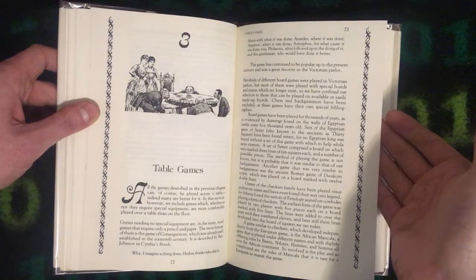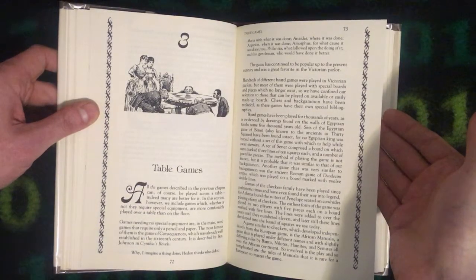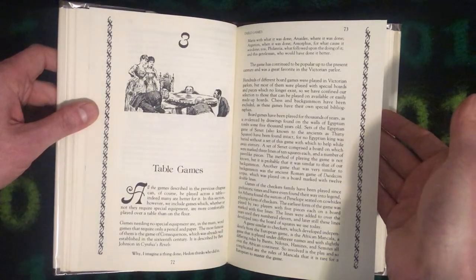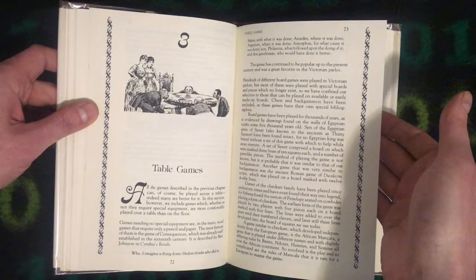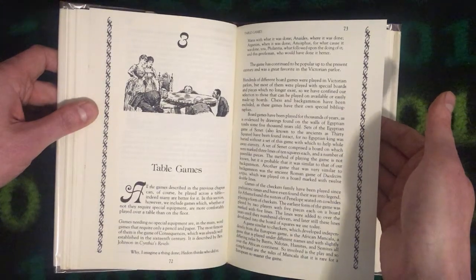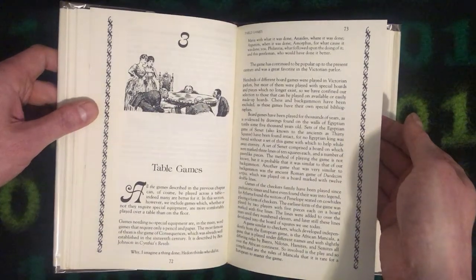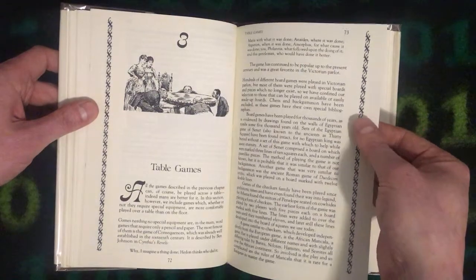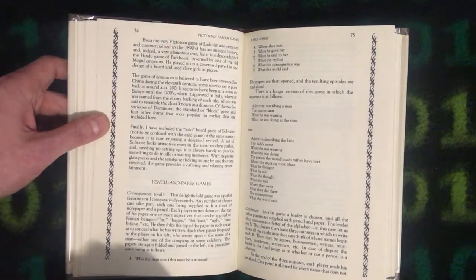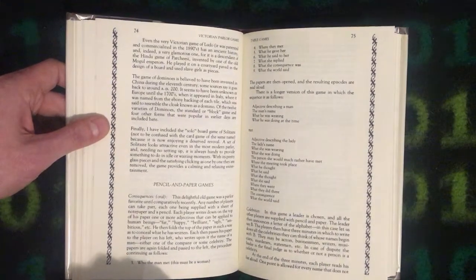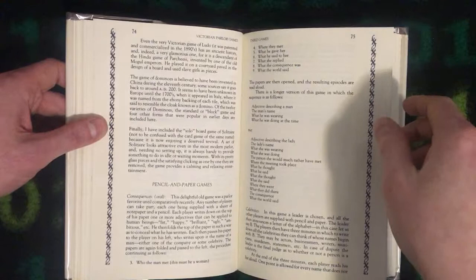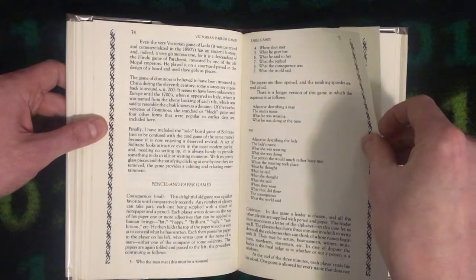A game similar to checkers which developed independently from the European game is the African Mancala. A game that is played under different names and with slightly differing rules by Bantu, Nilotes, Hamites, and Semites all over the African continent. So involved is the play and so complicated are the rules of Mancala that it is rare for a European to master the game. Mancala is one of those heritage board games like chess or Go that is deeply strategic. A very interesting game. If you've never played it you should try if you're into board games.